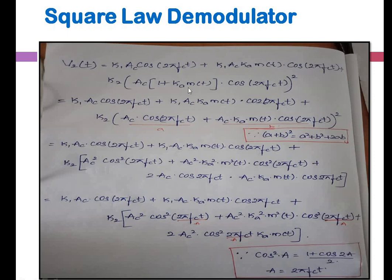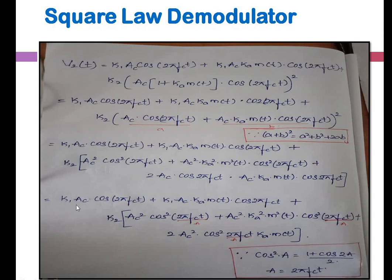Using the formula (A + B)² = A² + B² + 2AB: the first part stays as K1·Ac·cos(2πfc·t) plus K1·Ac·Ka·m(t)·cos(2πfc·t). Then with K2 as common, A² = Ac²·cos²(2πfc·t), B² = Ac²·Ka²·m²(t)·cos²(2πfc·t), and 2AB = 2·Ac·cos(2πfc·t)·Ac·Ka·m(t)·cos(2πfc·t). In case of any doubts, please let me know.